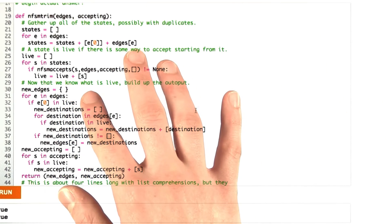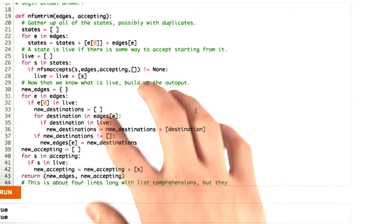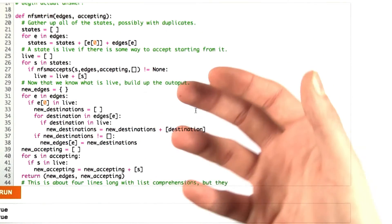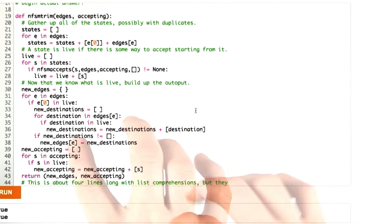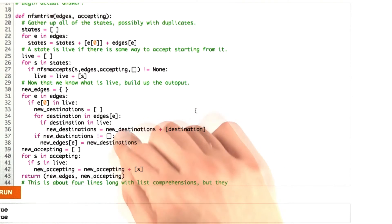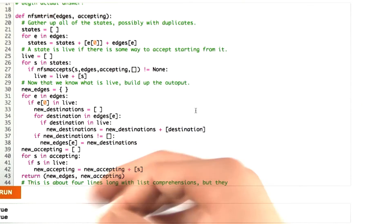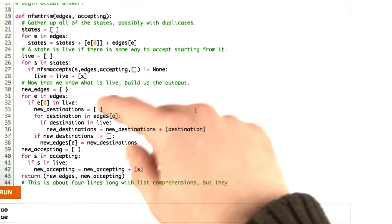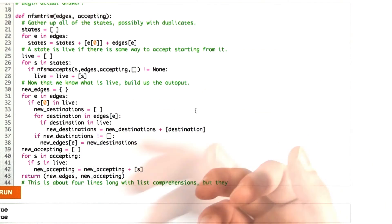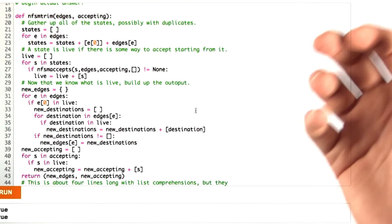So for each edge in the old dictionary, if that state is live, then I'm going to calculate the new destinations, namely I'm going to remove the destinations that are now dead. And so if that destination is live, I'm going to append it to the list. But I only want to set this new edge to my new finite state machine dictionary if the destinations are not empty. There's really no point in having an edge that goes to nowhere, that goes to fail.